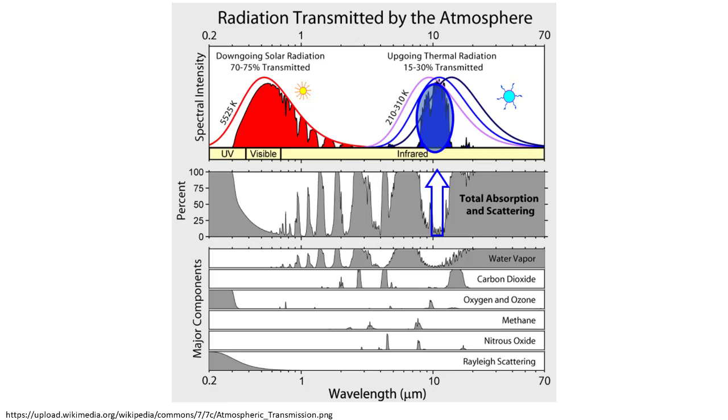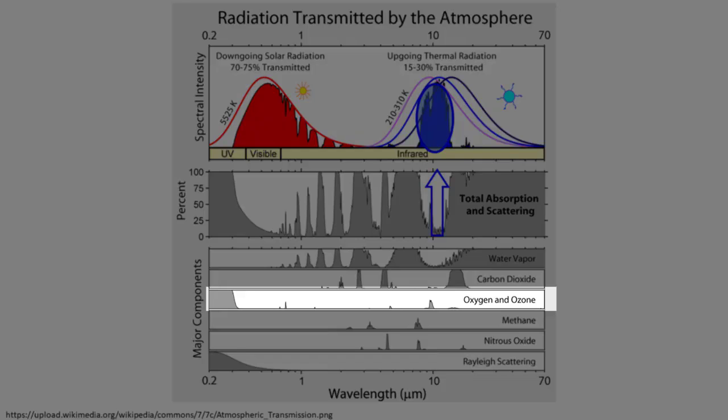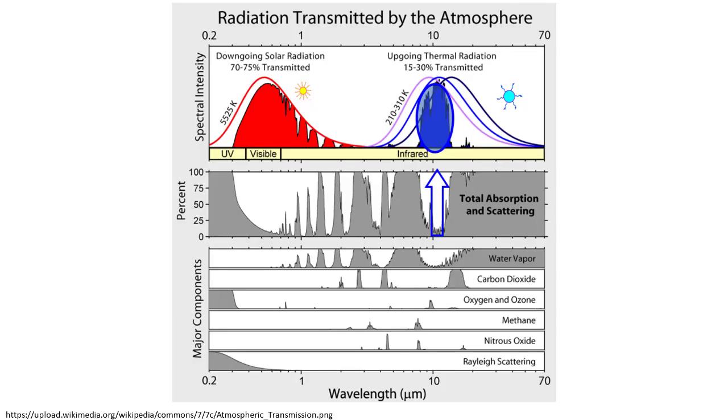The next one down is oxygen and ozone. Oxygen and ozone are doing their work in the stratosphere in the ozone layer, removing the very short wave, high intensity ultraviolet wavelengths that cause skin cancer.